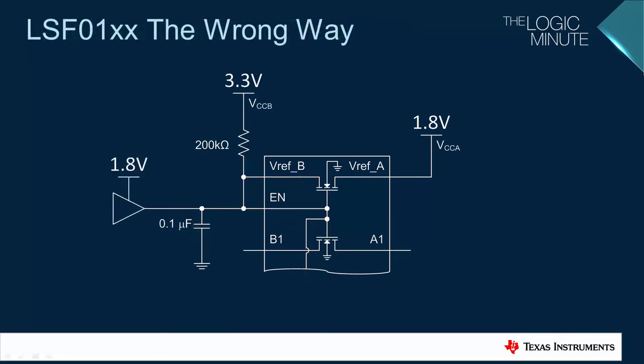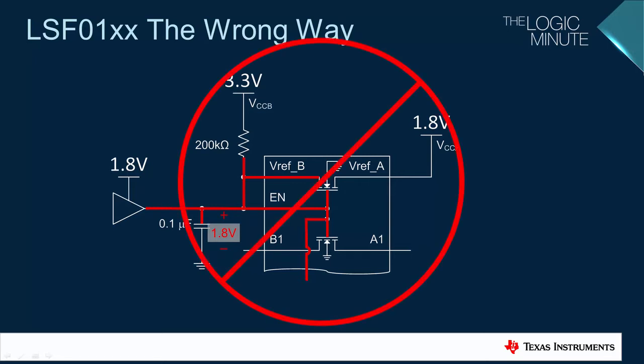If a standard CMOS driver with a 1.8 volt supply is connected to the enable pin, the bias voltage is being forced to 1.8 volts, which is now one threshold value lower than what it should be, and will cause problems with translation. This is the incorrect way to use the LSF's enable pin.